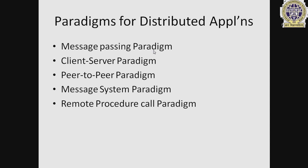Paradigms for distributed applications: number one, message passing paradigm; number two, client-server paradigm; number three, peer-to-peer paradigm; number four, message system paradigm; number five, remote procedure call paradigm. All these paradigms are used to communicate with each other — how two computers in a distributed system can communicate is defined by these paradigms.